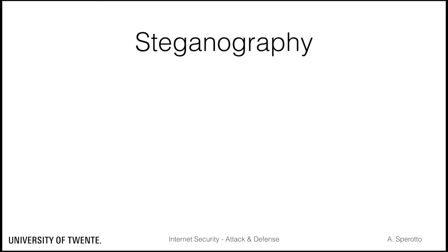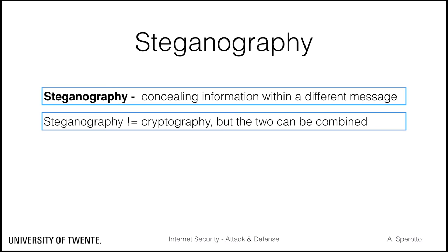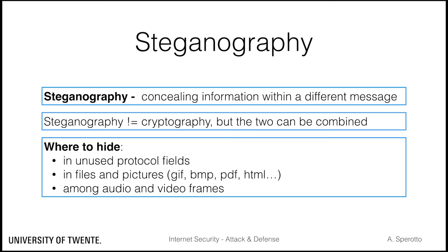Let's look at another example of data exfiltration: steganography. Steganography is defined as the practice of concealing information within a different message. In cybersecurity, this could mean hiding information inside a file, image, or video. Steganography is different from cryptography — cryptography aims at hiding the meaning of the message, while steganography hides the message itself. Of course, steganography and cryptography can be combined to make the detection of hidden channels more complex. A message can be hidden essentially everywhere: in unused protocol fields, in redundant spacing in files, or among frames in a video or audio.